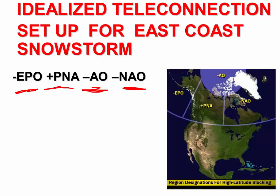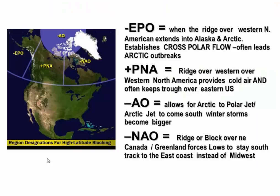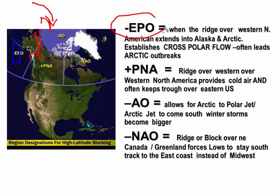This causes some confusion because people don't know exactly what these mean. I'll be posting this on the website and Facebook page. The negative EPO refers to the ridge over western North America extending into Alaska and the Arctic region, establishing a cross-polar flow — also known as the Siberian Express. When the EPO is negative, you get cross-polar flow which leads to big Arctic outbreaks coming southward.